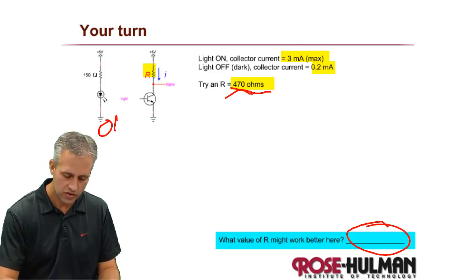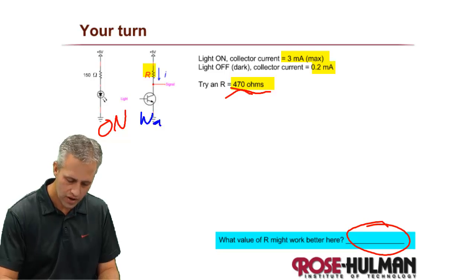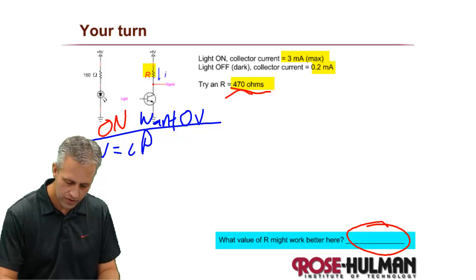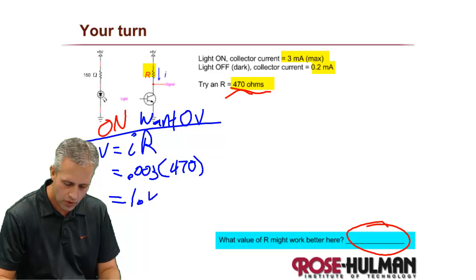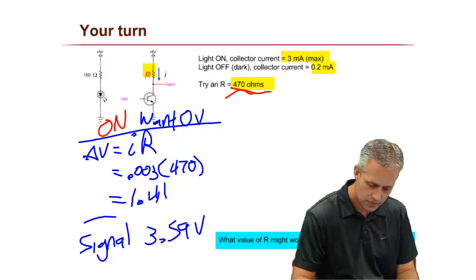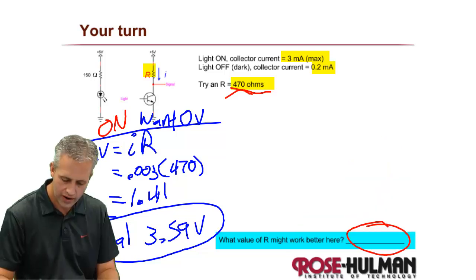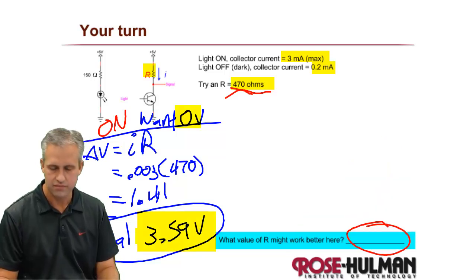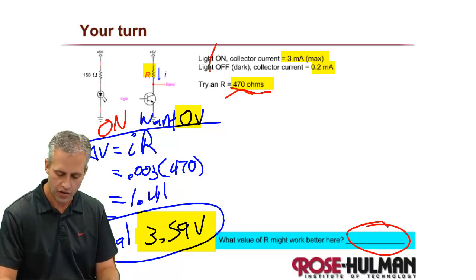All right, I'm going to do it as well. So whenever this thing is on, we want something that's close to zero. And whenever it's on, we've got a delta V of V equals IR. So our delta V here is 0.03 times a 470. So our voltage drop here is 1.41. So that means that our signal is getting five minus that number. So 3.59 volts. So I'll say that already I can see there's a problem, because we wanted zero and we got like three and a half. So already I can tell that there's a problem.